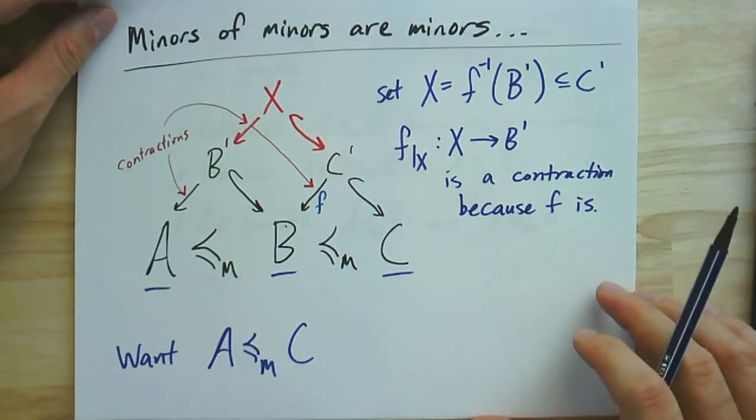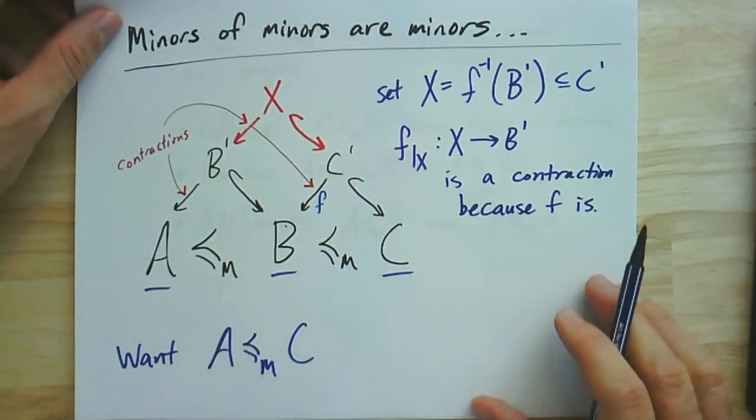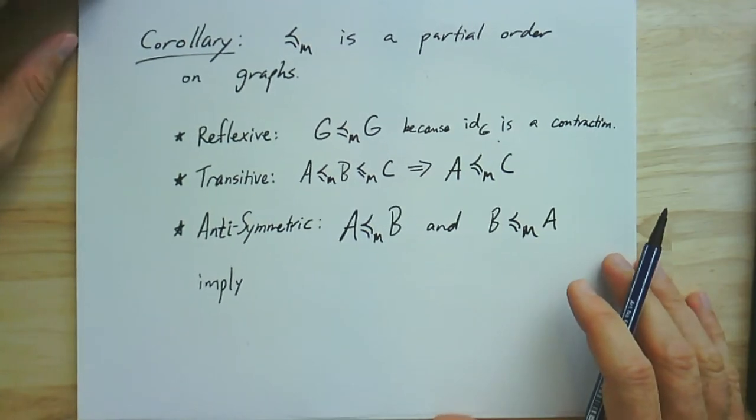So minors of minors are themselves minors. We get this transitivity. And so let's write it out. Write out what we've proven, which is that this relation, this binary relation on graphs, that is the relation of being a minor, is a partial order on graphs.